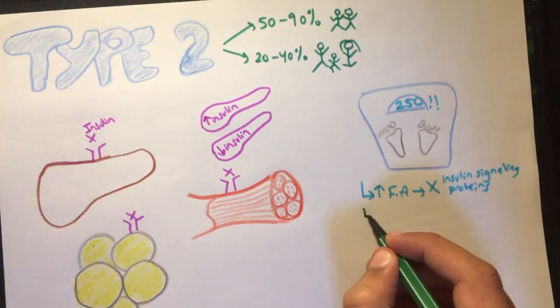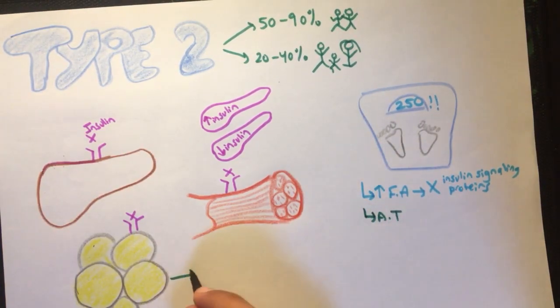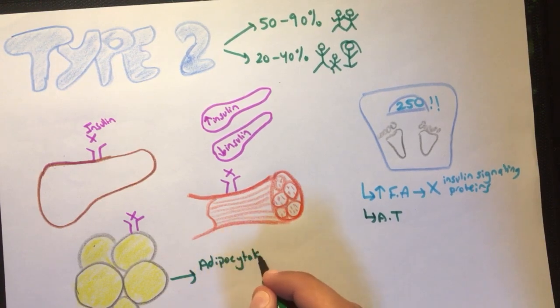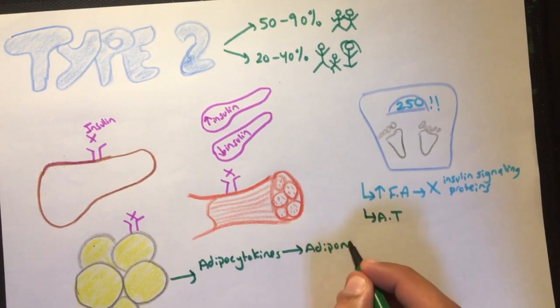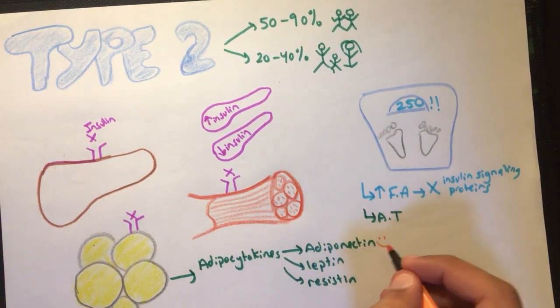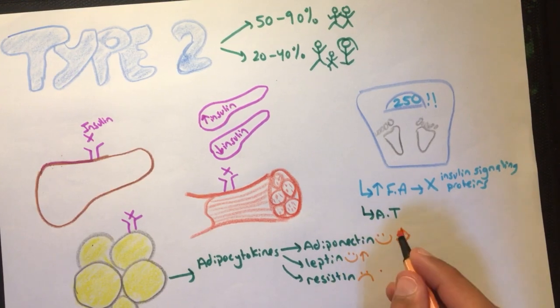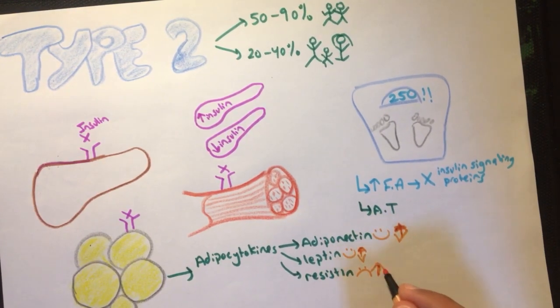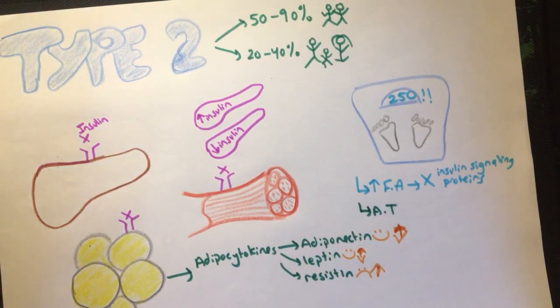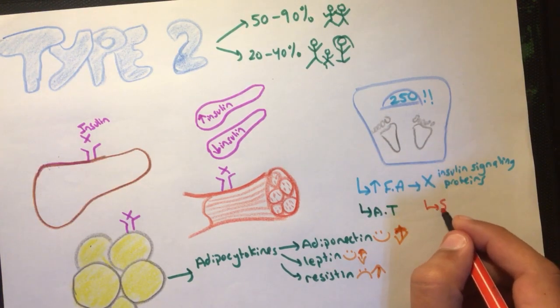Second of all, adipose tissue, which is the fat storage, contain hormones called adipocytokines, divided into adiponectin, leptin, and resistin. Now, adiponectin and leptin are good hormones, while resistin is a bad hormone that can cause insulin resistance. So in a case of type 2 diabetes, adiponectin and leptin will decrease while resistin will increase.